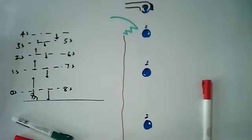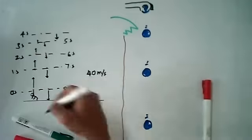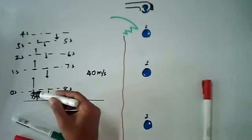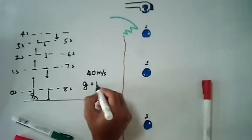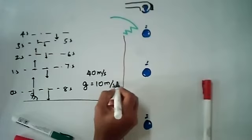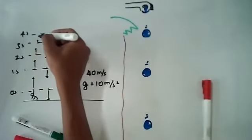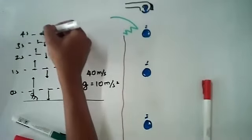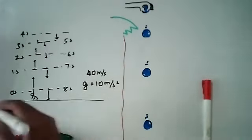Let's say that somebody threw up an object with a speed of 40 meters per second in the upward direction. The acceleration due to gravity, g, is 10 meters per second squared, so the object is going to drop 10 meters per second every second. It's going to take four seconds to reach the highest point and then another four seconds to come back to the same height.